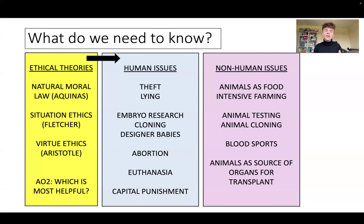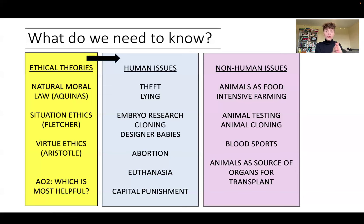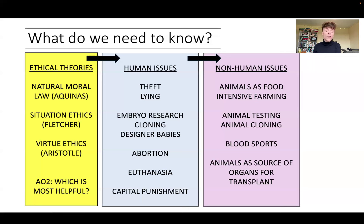We need to think about the key components of each ethical theory — for example, the five primary precepts — and apply them to the issues, asking whether Aquinas would support or oppose abortion. We then have the non-human issues, which are all about how human beings use animals. According to the AQA specification, we need to be ready to apply our ethical theories to: animals as food including intensive farming, animal testing, animal cloning, blood sports, and animals as a source of organs for transplant.